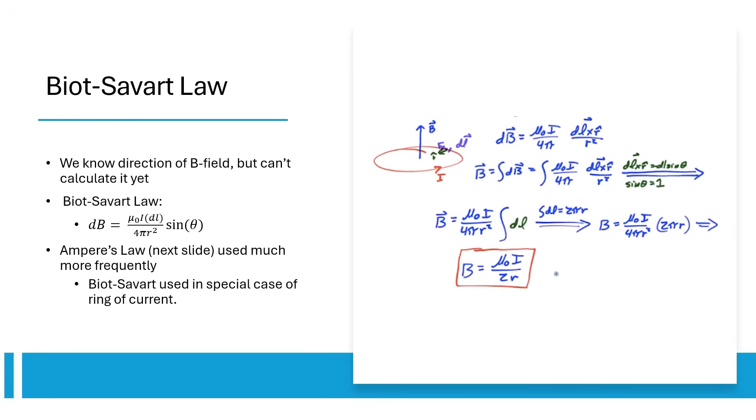There's one special case we have to use Biot-Savart's law, when dealing with a ring of current. To the right, we see how integrating the equation and substituting 2 pi r for dl gives us an expression for B-field at the center of a ring of current.